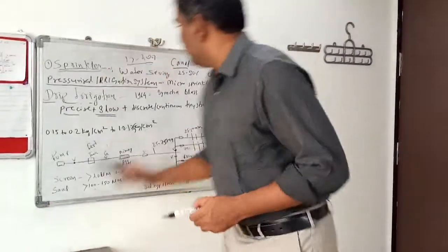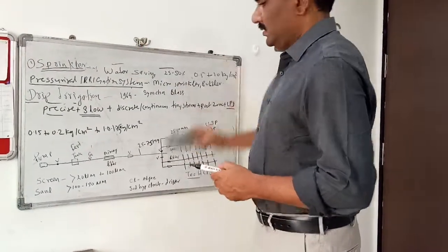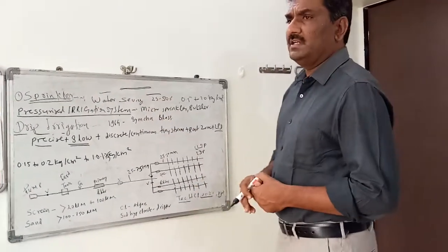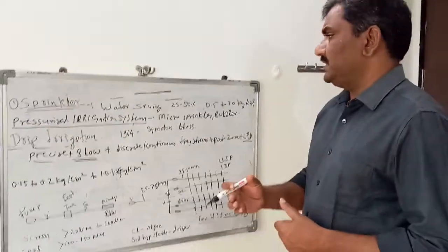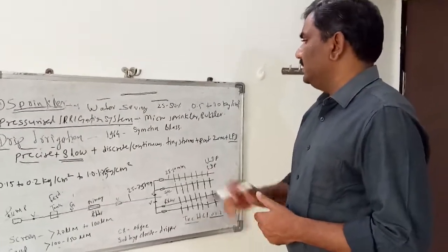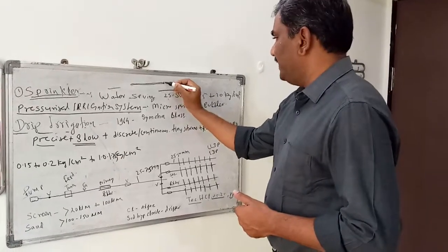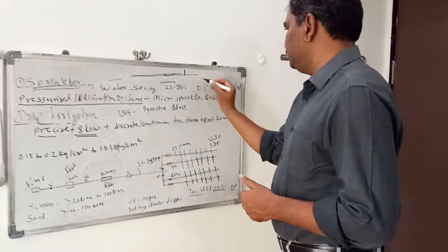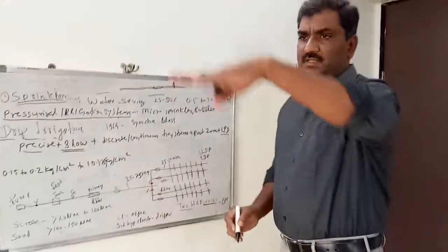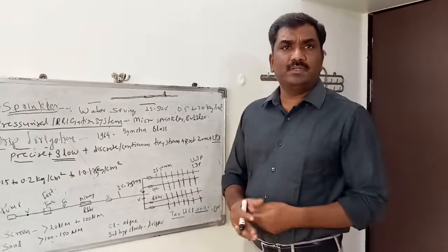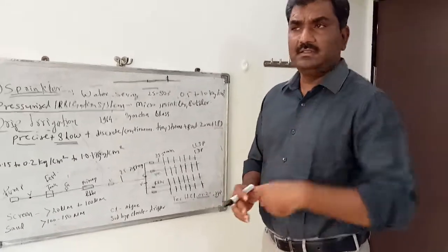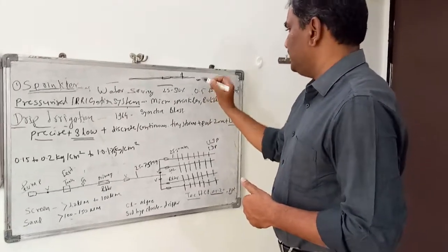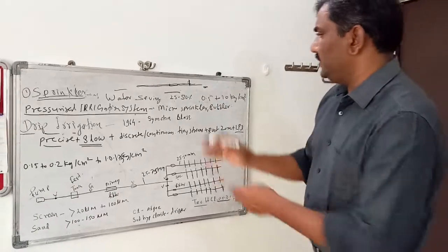In this system we use only 2-3 components, just like a main pipeline. You can use a filter if the water source has suspended particles, either organic or inorganic. After that, a riser is used to carry the water up to a certain level — that riser height depends upon the crop height. The maximum crop height is taken and that height of the riser is used. And then the last component is the sprinkler.